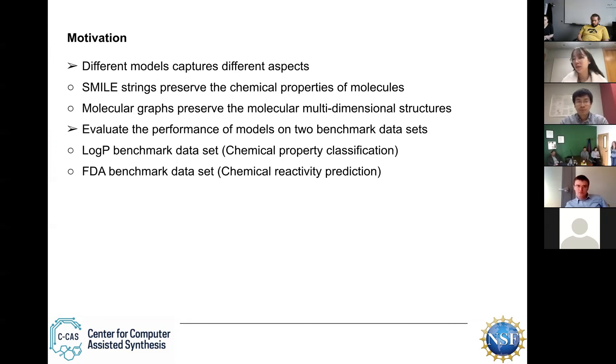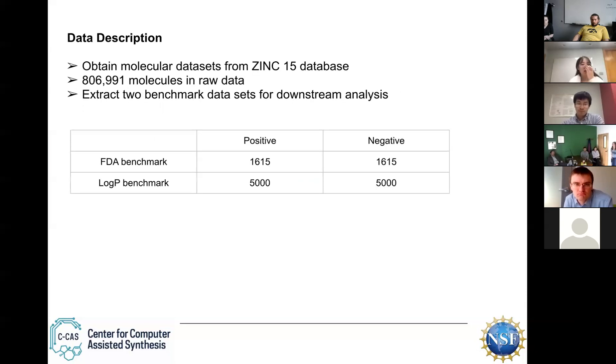LogP is determined by the molecular solubility and FDA means the molecules are approved by drug compounds. I see FDA is related to the chemical reactivity. So I obtained the data from zinc and extract two benchmark data sets for the downstream analysis. For the FDA, the positive means these molecules are approved by drug compounds and the negative means they are not approved. And LogP, if it is positive, it means this molecule's solubility is no less than 1.88.